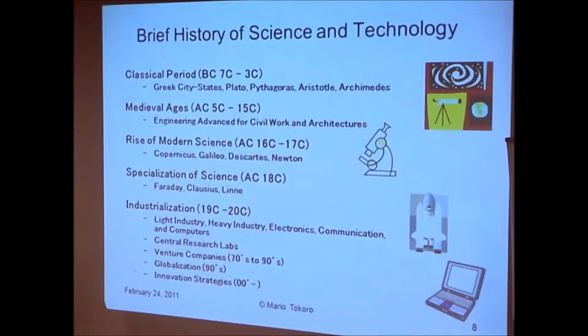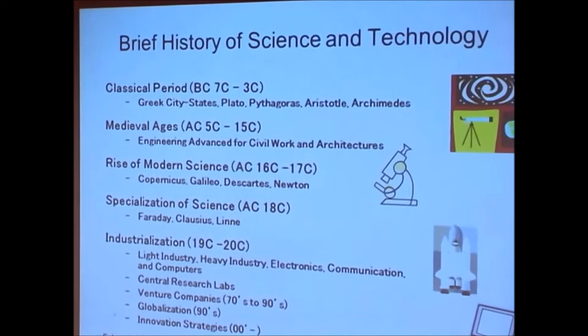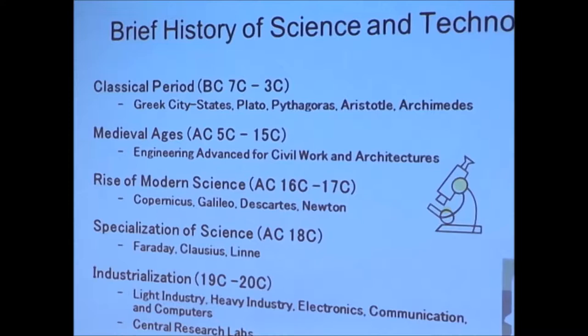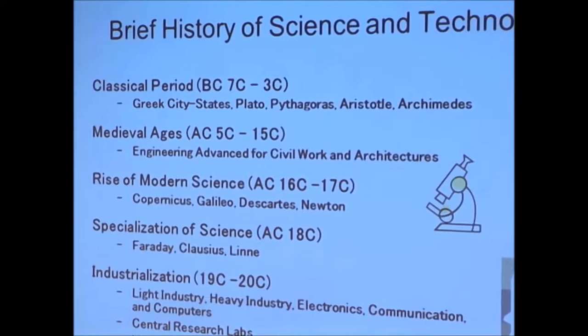Today I'd like to share some thoughts on how we should conduct our research toward the future. Looking back on history, in the classical period the center of science was in Greece, at Plato's Academia, the most prototypical school of that era. The most notable examples of flourishing Greek science are Pythagoras' mathematics, Aristotle's natural science, and Archimedes' mathematics. It was at that time that the concept of grasping things logically was established.